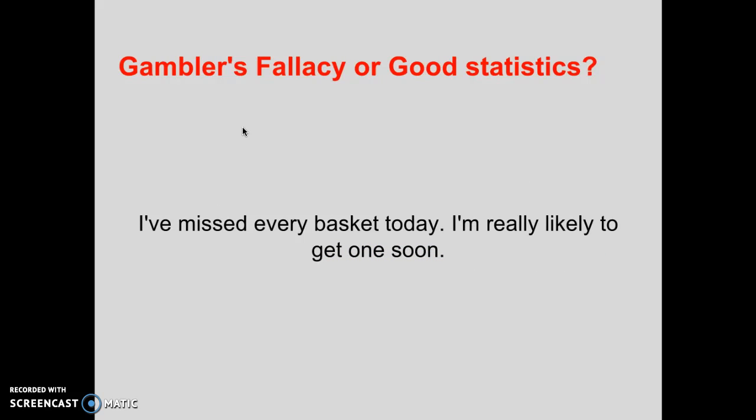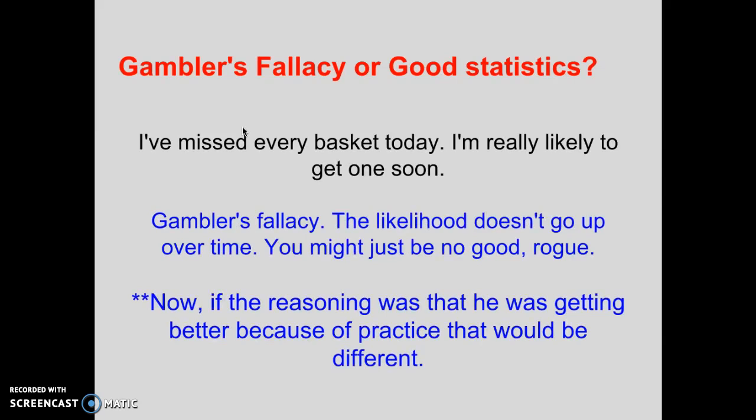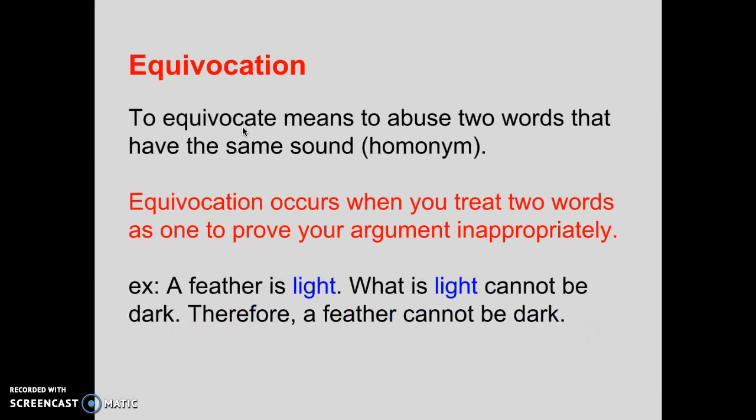'I've missed every basket today, so I'm really likely to get one soon.' Gambler's fallacy — the likelihood doesn't go up over time. You might just be no good. Now, if the reasoning was that you get better with practice, that would be different.